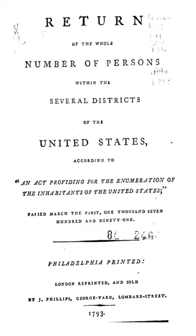The 1980 Census sample questions included: in what state or foreign country was the person born; if born in a foreign country, whether the person was a naturalized citizen of the United States and when they came to the United States to stay; whether the person speaks a language other than English at home, and if so, what language and how well they speak English; and what is this person's ancestry.